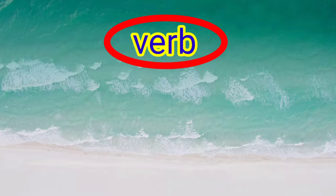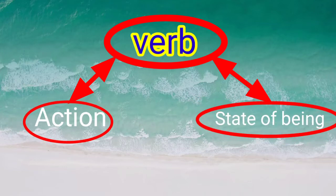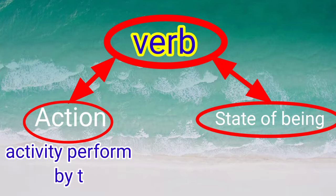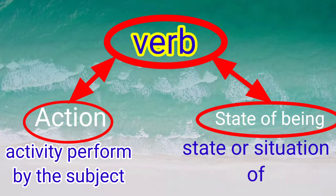First: action or state of being. Action or activity performed by the subject. And state of being verbs describe the state or situation of the subject.